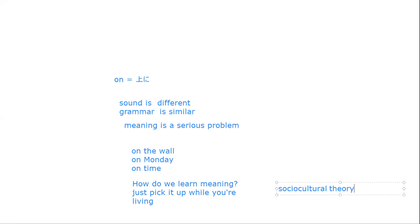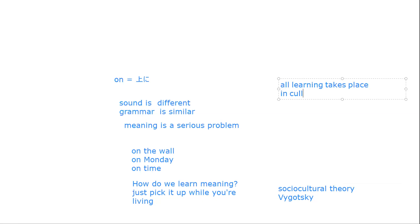That is the idea with what they call sociocultural theory, from a guy called Vygotsky. The idea is that all mental development — everything you learn — takes place in cultural activity. So the cultural activities you're engaged in as a native speaker learning your first language are different from the cultural activities you're engaged in learning your second language.